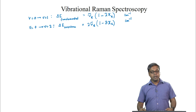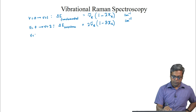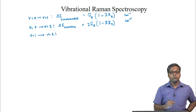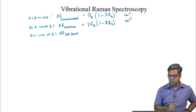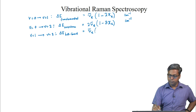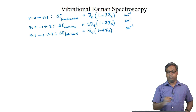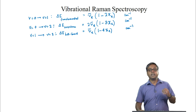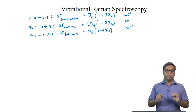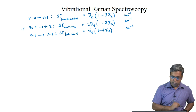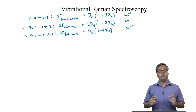The other transition we can get is a hot band, where it starts from an excited vibrational level: V=1 to V=2. In this case, delta E_hot-band equals nu-bar_E times (1 minus 4*chi_E), in wave numbers. Since Raman scattered light is in any case of low intensity, we can ignore weaker effects such as overtones or hot bands, and we will restrict our discussion to the fundamental transitions.